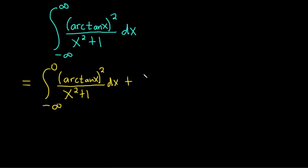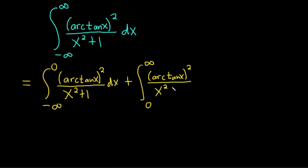And then we'll go from zero to infinity — same thing, arctangent of x, quantity squared, over x squared plus one. You could have used any other number; I've done problems like this before and zero is just really convenient to use.